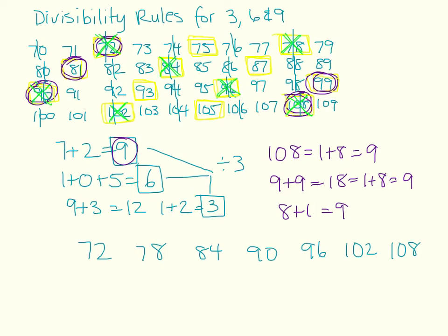If you notice, these are all even numbers. So all numbers divisible by 6 are divisible by 3, but they're also divisible by 2. Are there any numbers divisible only by 3 or only by 2 that are also divisible by 6? No — all these numbers are divisible by both 3 and 2. Take a moment and write your divisibility rules for 3, 6, and 9 in your journal.